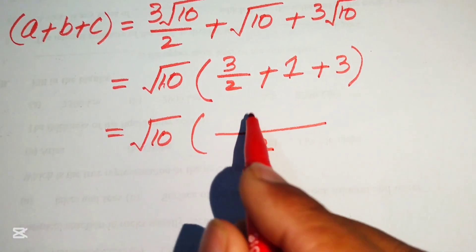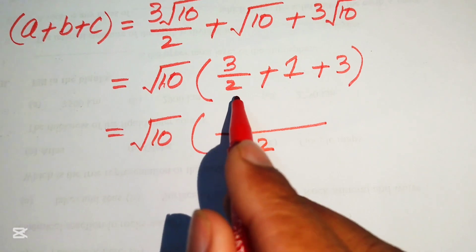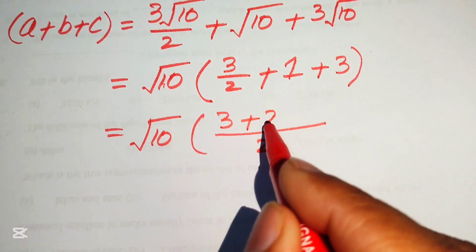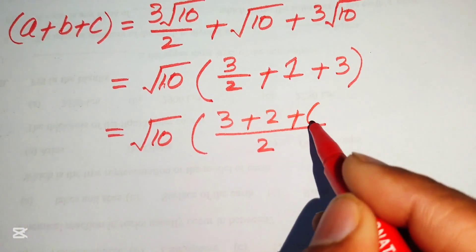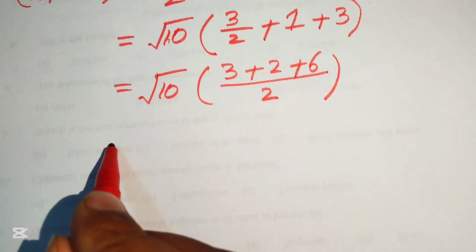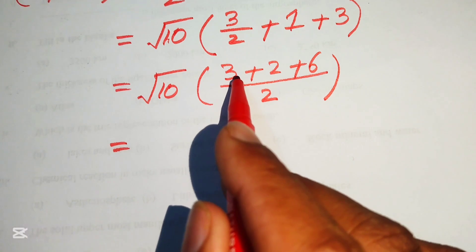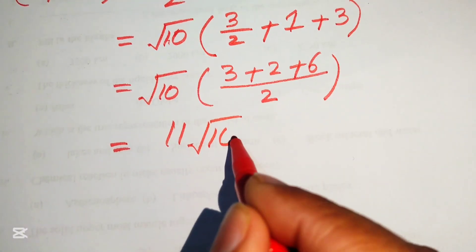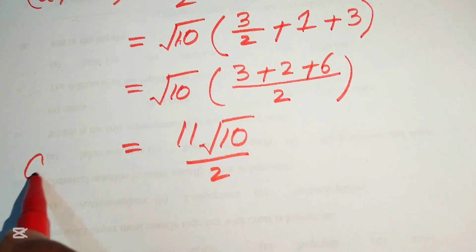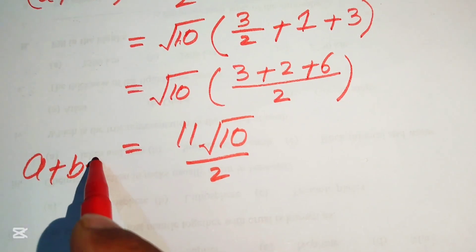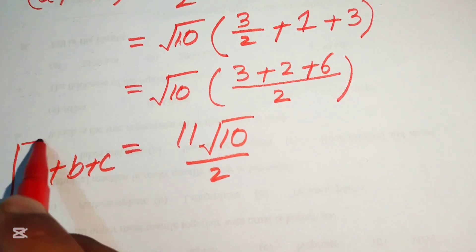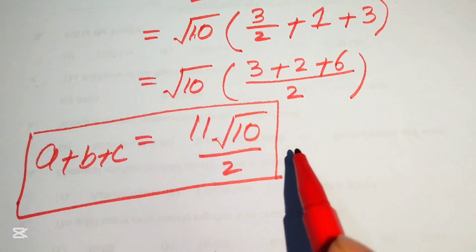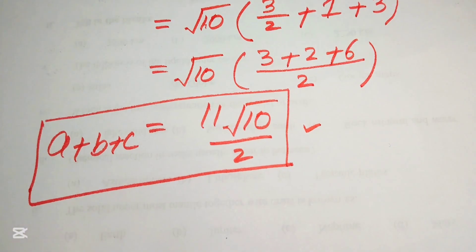Taking LCM of 2 for the terms inside the bracket: (3 + 2 + 6) / 2 = 11/2. Therefore, a + b + c = 11√10 / 2. This is the final answer.